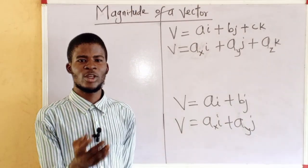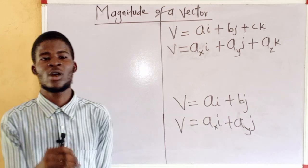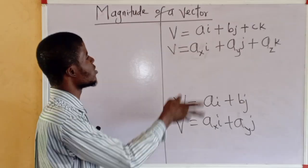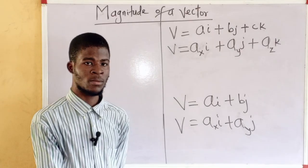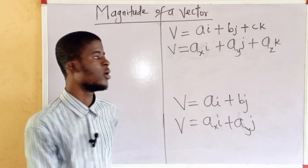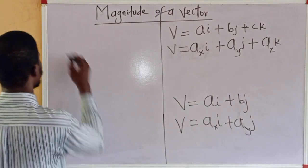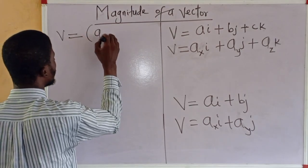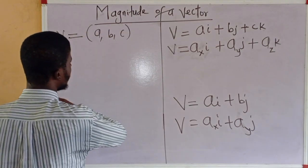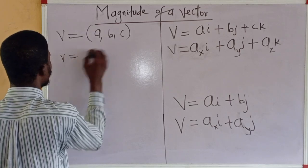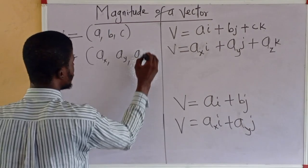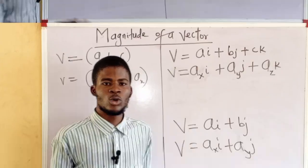We can write vectors in another way. We can represent them in another format, the bracket form. What we can see now is called the component form. In bracket form, we can say V equal to (a, b, c). As the case may be, (a_x, a_y, a_z). The same thing.